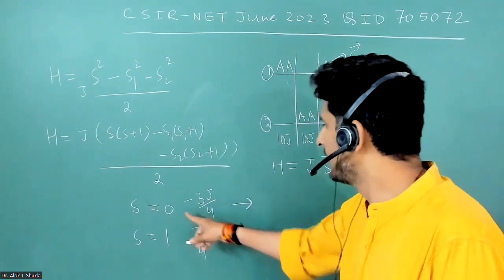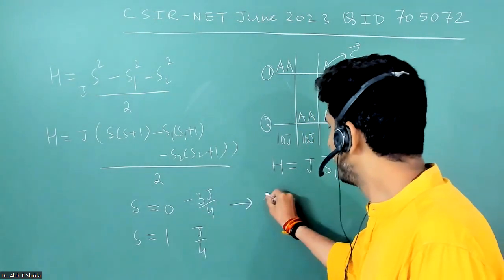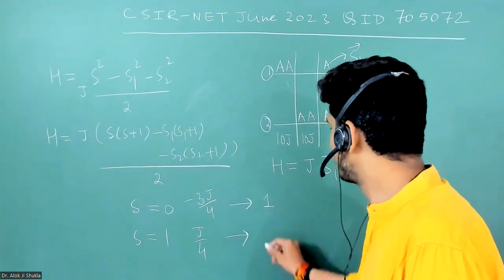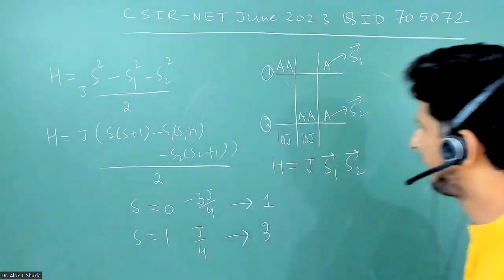And similarly put S is equal to one here. So these are the two levels of energy you get, and degeneracies involved is two S plus one. So here you will get degeneracy one, and here two S plus one, here degeneracy is three.